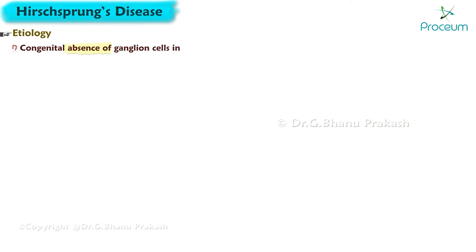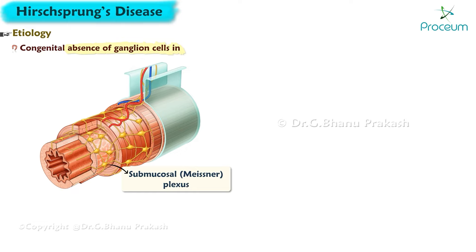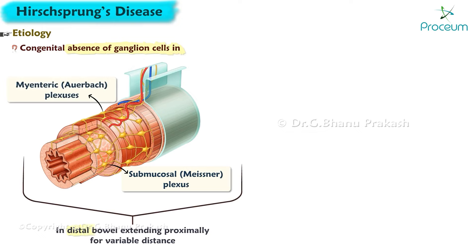It involves the congenital absence of ganglion cells in the submucosal Meissner and myenteric Auerbach plexuses in the distal bowel, extending proximally for variable distances.